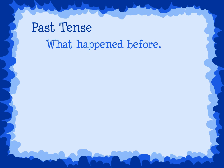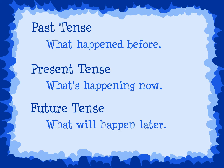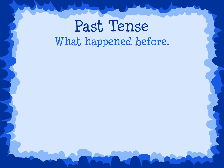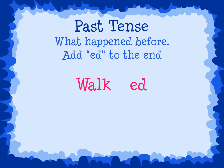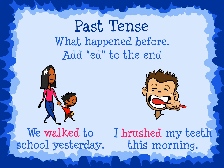Action verbs have different tenses to show past, present, and future. When we are talking about an action that happened before or in the past, we will usually add ED to the end of the verb. For example, walk turns into walked: 'We walked to school yesterday.' Brush turns into brushed: 'I brushed my teeth this morning.' Adding ED to the end of a verb shows actions that happened in the past.